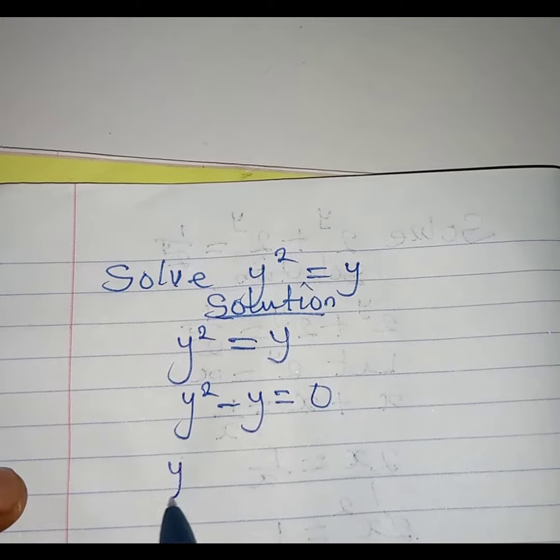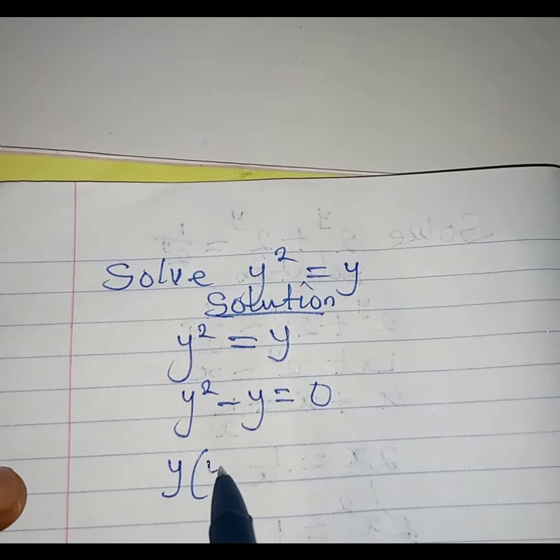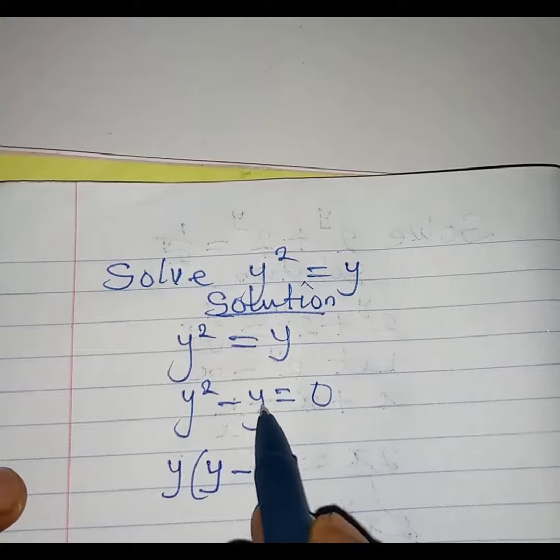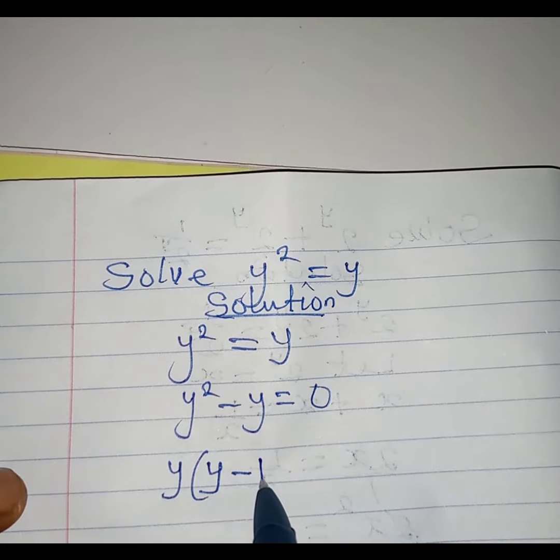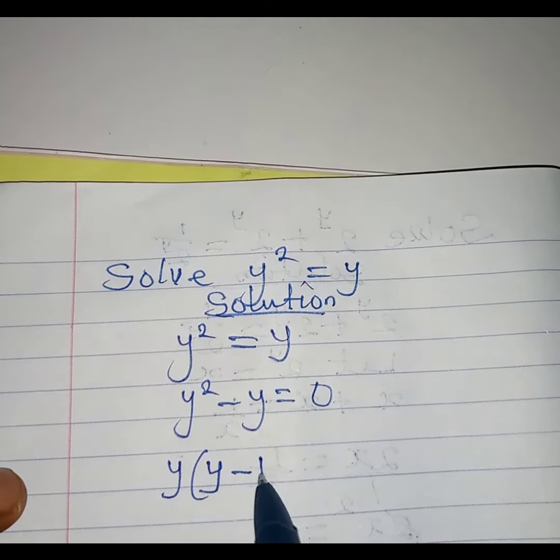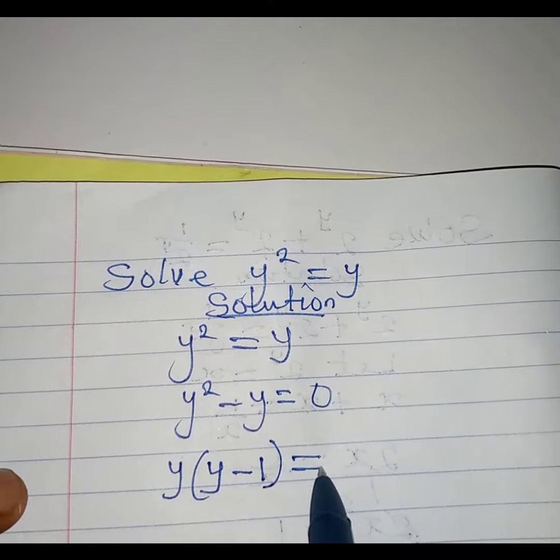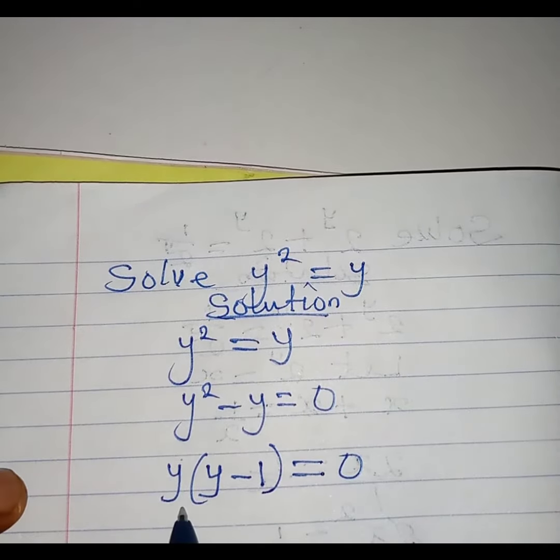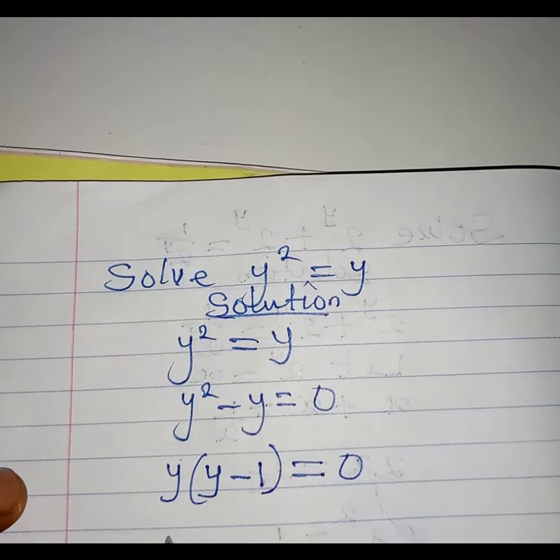So I'll factor out y, and then in brackets I'll have y minus one, because y times y gives us this term. This equals zero. From here we can now say that either factor could be zero.